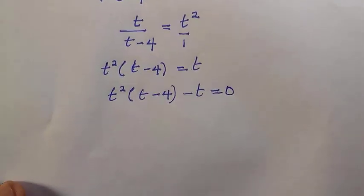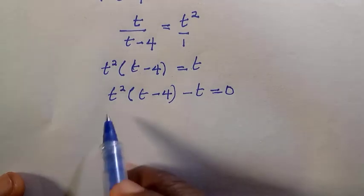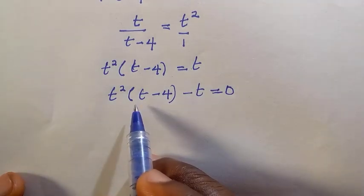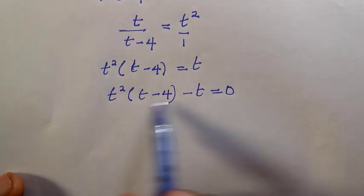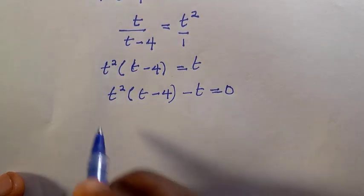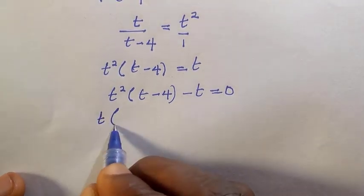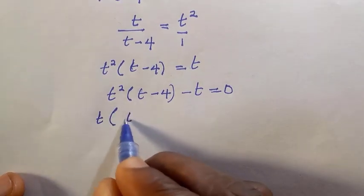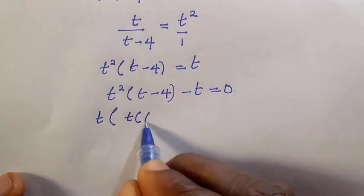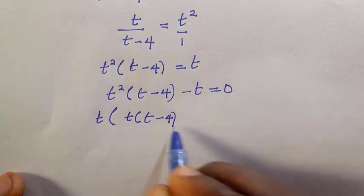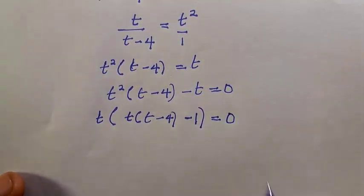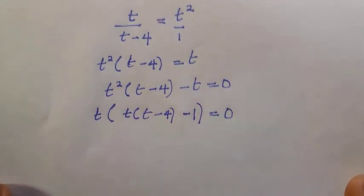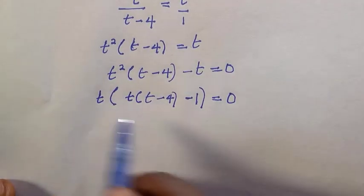Expanding this would give a cubic equation, which is a long process. So instead, we factorize out t. Factorizing out t makes this much easier to solve. This becomes t bracket, open bracket t minus four, close bracket, minus one, everything equals zero.